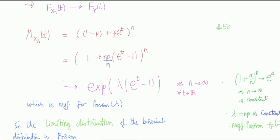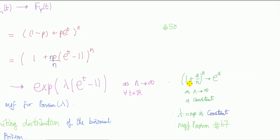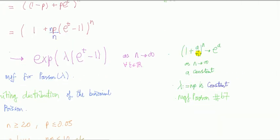Now why did I do that? I did that because I want to apply the following result from calculus. This expression here, taking 1 plus a constant over n, and taking that to the power of n, and now as n tends to infinity, that tends to e to the a, this constant.